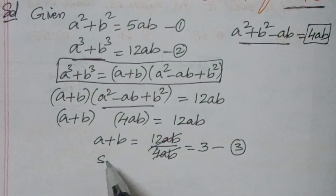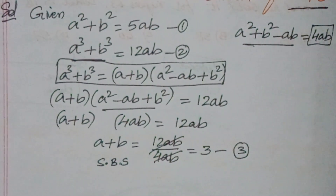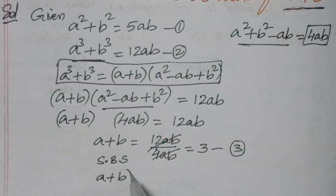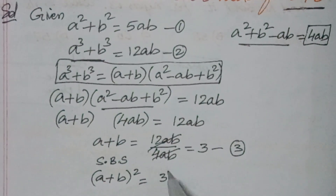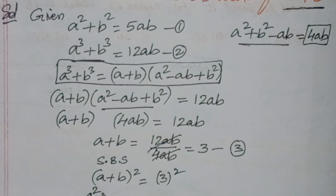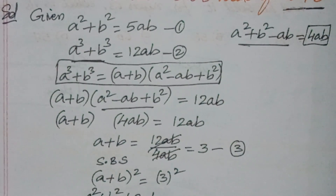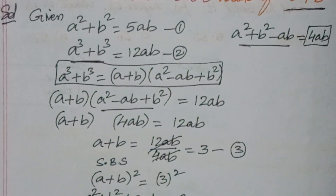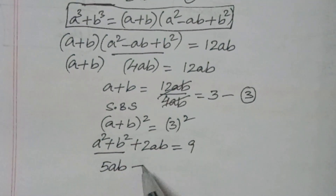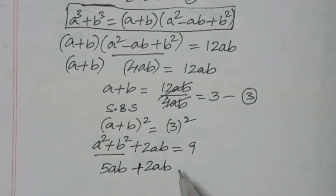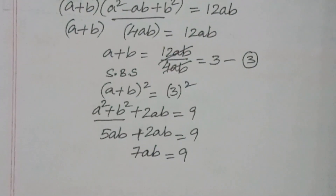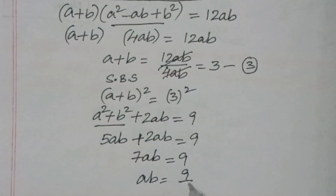Now, squaring both sides of equation 3 — we do this because we need to find the value of ab. So (a plus b) squared equals 3 squared, giving a squared plus b squared plus 2ab equals 9. Since a squared plus b squared equals 5ab from equation 1, we substitute: 5ab plus 2ab equals 9, so 7ab equals 9, therefore ab equals 9 by 7.